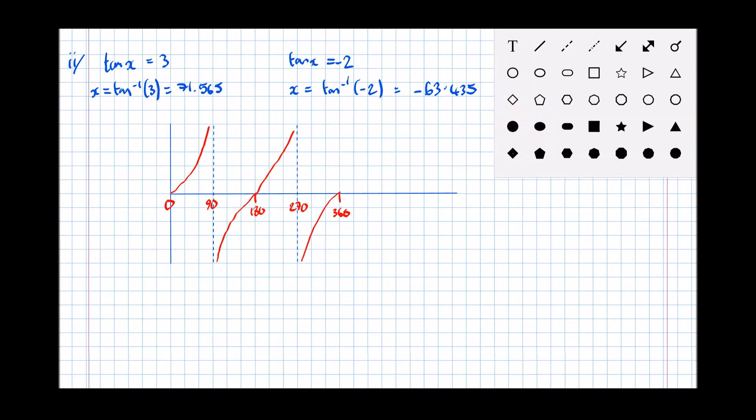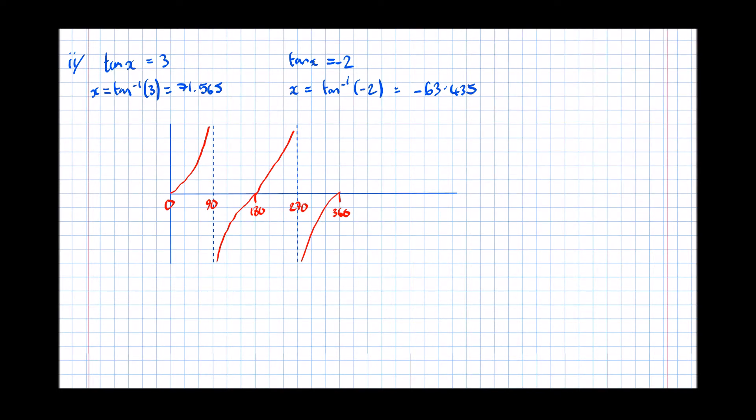And we want everything that has a tan of positive 3. I'm going to say it's roughly there. So tan of positive 3. There's two solutions there. The first one we already know. It was 71.565.